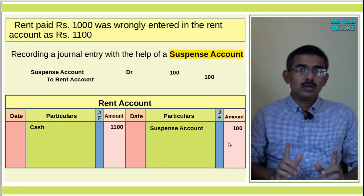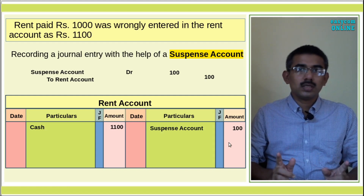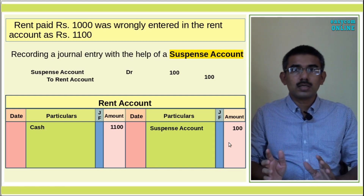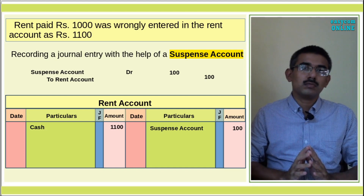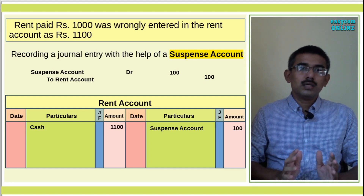In the two methods, one-sided errors are rectified: either using explanatory notes, or by correcting through the Suspense Account.